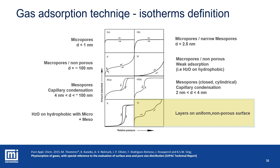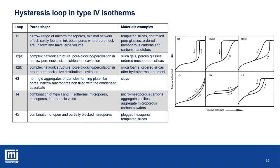The hysteresis loop can also be used as a fingerprint of pore shapes. The hysteresis picture can indicate wide or narrow pore size distribution, cylindrical ink-bottle pores, and pore networks. The table relates the most common pore shapes to the loop images.